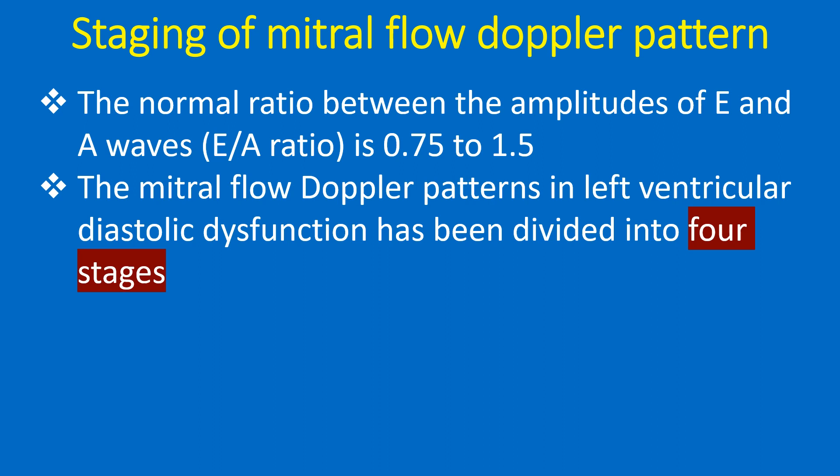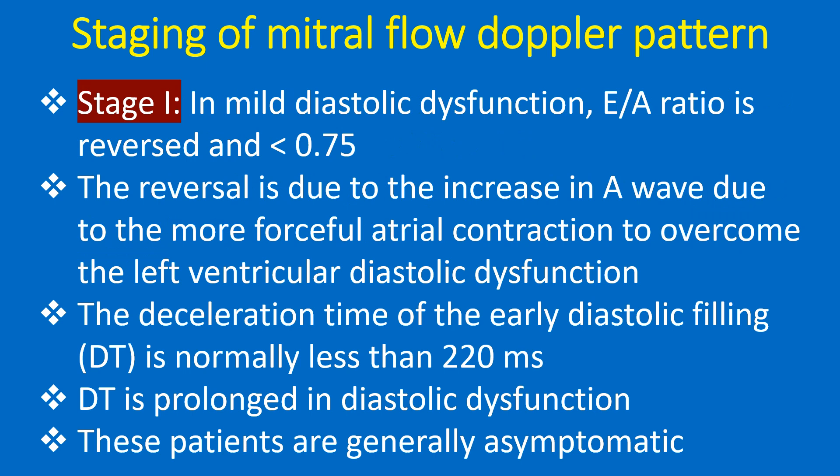The mitral flow Doppler patterns in left ventricular diastolic dysfunction have been divided into 4 stages. In Stage 1 (mild diastolic dysfunction), the E-by-A ratio is reversed and less than 0.75. The reversal is due to increased atrial contribution as the atrium contracts more forcefully to overcome left ventricular diastolic dysfunction. The deceleration time (DT) of early diastolic filling is normally less than 220 ms, and is prolonged in diastolic dysfunction. These patients are generally asymptomatic.